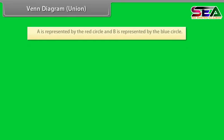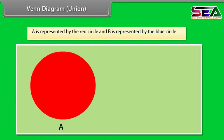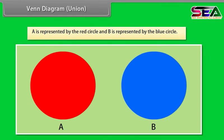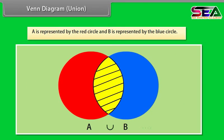Venn diagram. A is represented by the red circle and B is represented by the blue circle. The union consists of all points which are colored red or blue or yellow.